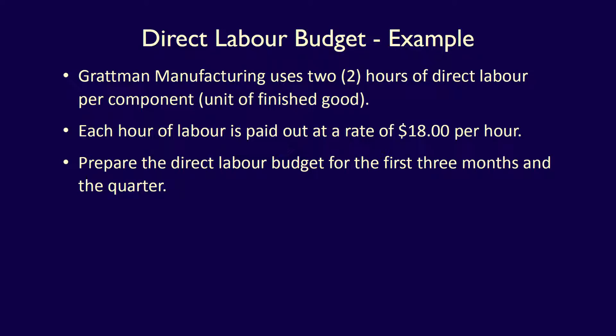Gratman Manufacturing uses two hours of direct labour per component. Each hour of labour is paid out at a rate of $18 per hour. Prepare the direct labour budget for the first three months and the quarter.